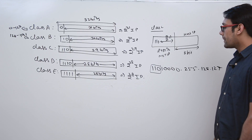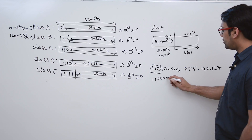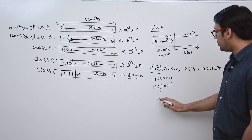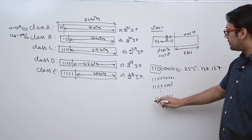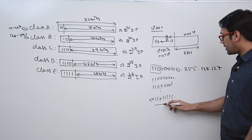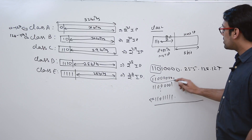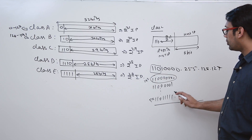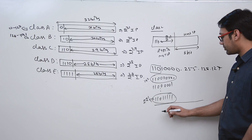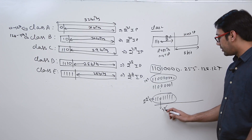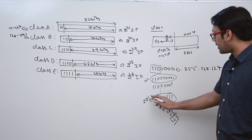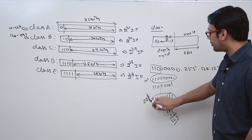If the first three bits are fixed as 110, the IP address belongs to Class C. The Class C first octet starts from 11000000 (the first IP address) up to 11011111 (the last IP address). In decimal, this means the first octet ranges from 192 to 223. So if the first octet of an IP address is between 192 and 223, that IP address belongs to Class C.